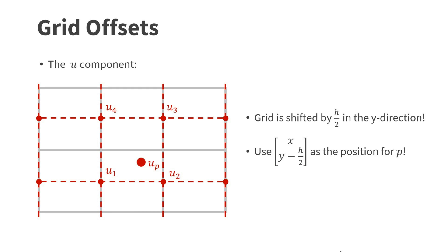In a staggered grid, we have to consider the specific locations of the velocities. For instance, the U components are stored on a grid that is shifted down by half the grid spacing. We can simply handle this by using Y minus H over 2 as the y-coordinate of the particle in the equations before.